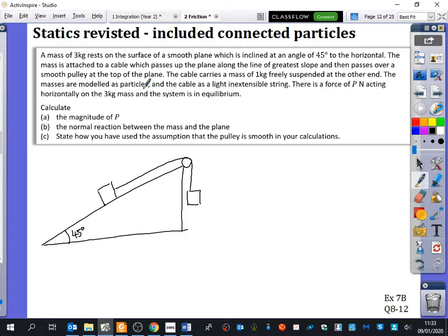There is a force of P Newtons acting horizontally on the three kilogram mass. And the system is in equilibrium. Can you just show me with your arm what horizontally looks like? Good. So I don't want to see a force like this. I don't want to see that because that's not horizontally. I want to see something that is actually going to be acting on it in a horizontal direction in this kind of way.